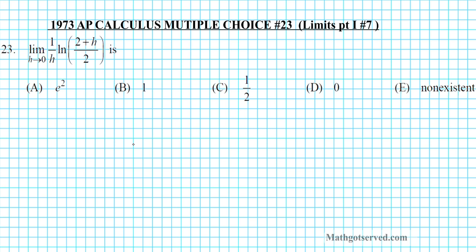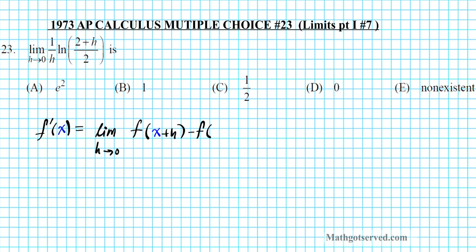This problem is assessing your ability to use the limit definition of a derivative to find the derivative of a function at a particular point. So before we get started evaluating this limit, let's write down the limit definition of a derivative. There are two of them, but the one we are going to be using here is this variation: f prime of x is equal to the limit as h approaches 0 of f of x plus h minus f of x, divided by h. This is one variation of the limit definition of a derivative.